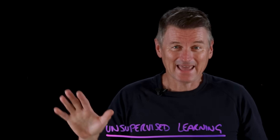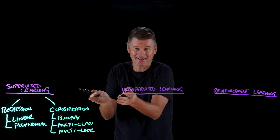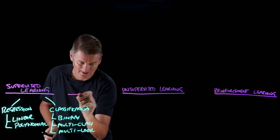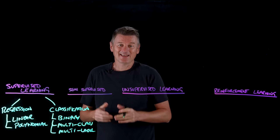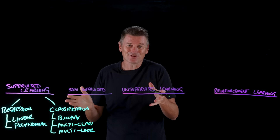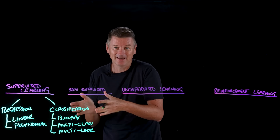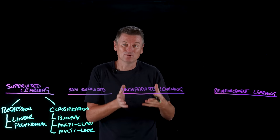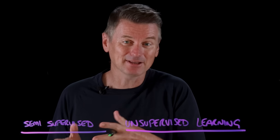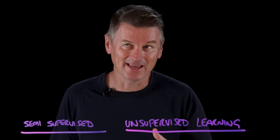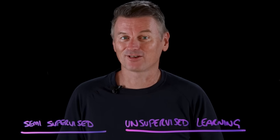Before we get to unsupervised learning, there's something that sits between supervised and unsupervised called semi-supervised learning. You train with a small labeled dataset plus a large unlabeled pool to improve the supervised model. It uses the labeled examples to generalize over the unlabeled data, so you need far fewer costly labels.